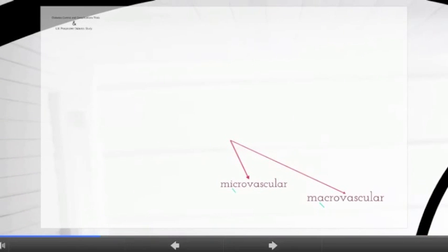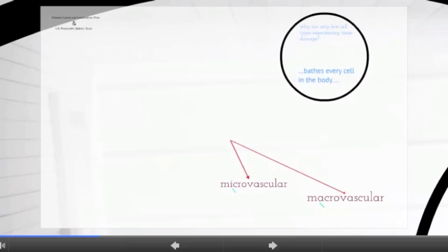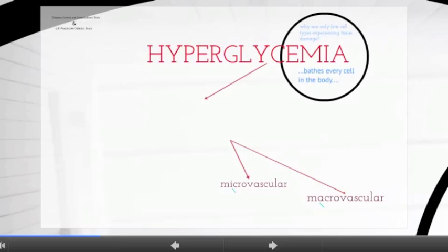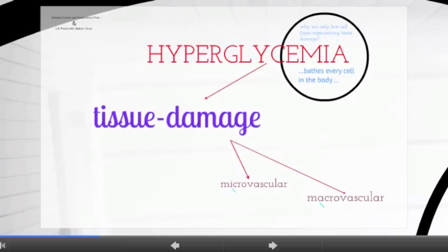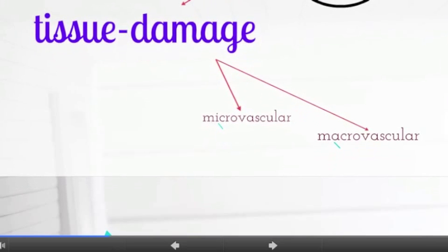The Diabetes Control and Complications Trial and the UK Prospective Diabetes Study, along with follow-up studies by the Epidemiology of Diabetes Interventions and Complications study, point towards hyperglycemia as the cardinal measure in the progression of tissue damage in diabetic vascular diseases, even though they may occur concurrently with other complications such as dyslipidemia and hypertension.